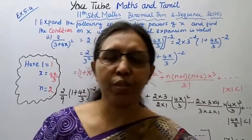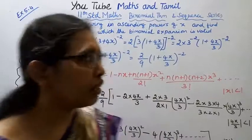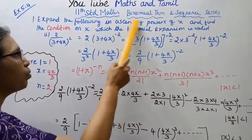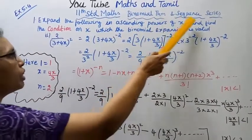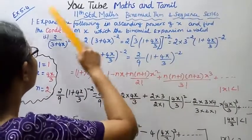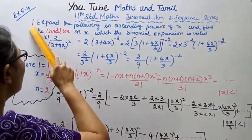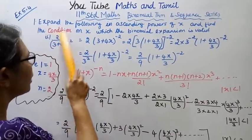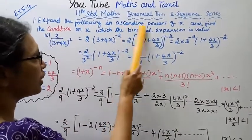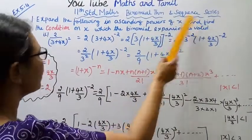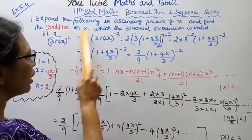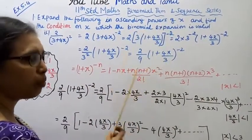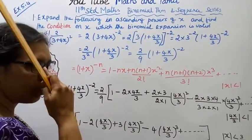Hello students, welcome to Max and Tumult channel. Levens Tenamax — Binomial Theorem, Sequence and Series, Exercise 5.4, first class, second subdivision. Expand the following in ascending powers and find the condition on x for which the binomial expansion is valid.